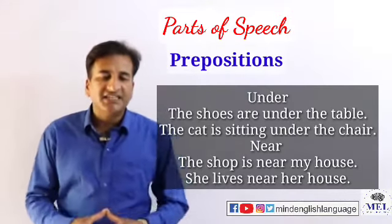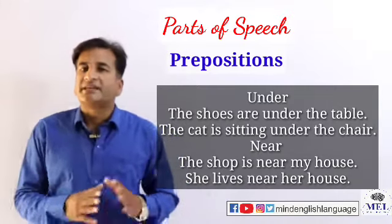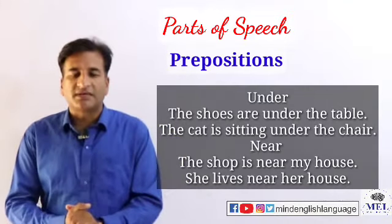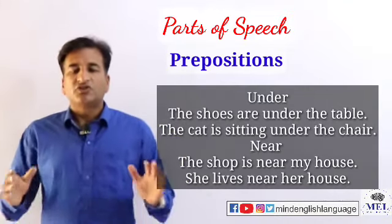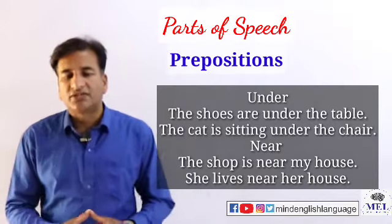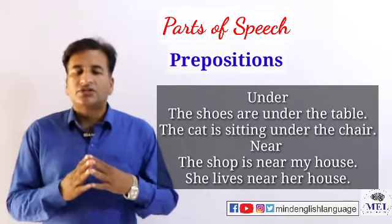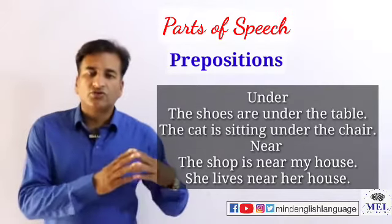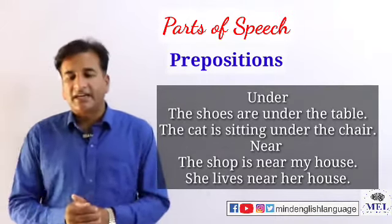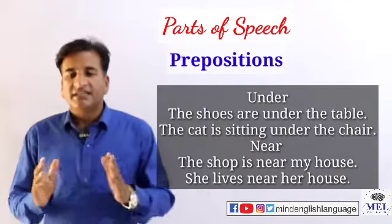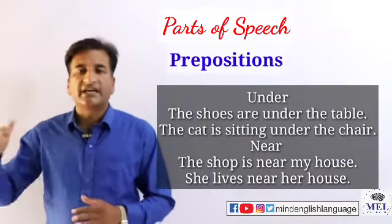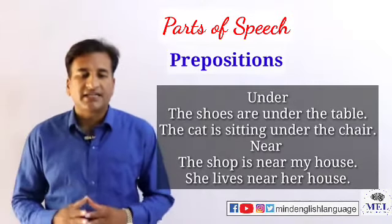اب ہم دیکھتے ہیں کہ 'near' جو ہے یہ کیسے preposition of place کے طور پر استعمال ہوتا ہے۔ 'The shop is near my house' — جو دکان ہے وہ میرے گھر کے قریب ہے۔ 'She lives near her house' — وہ اس کے گھر کے قریب رہتی ہے۔